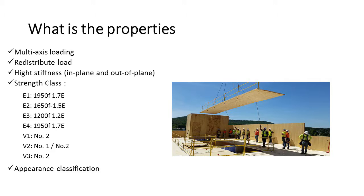Another property is the appearance classification. For example, you can choose an architectural appearance, which means that your CLT panel will be visible from inside the building, so you want a really nice-looking CLT panel.